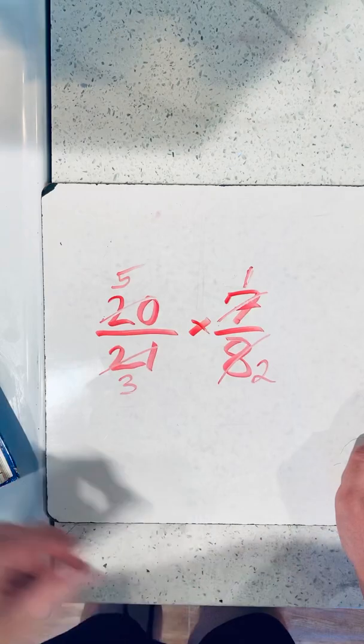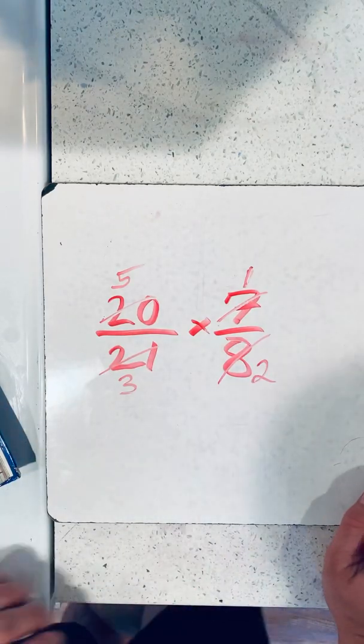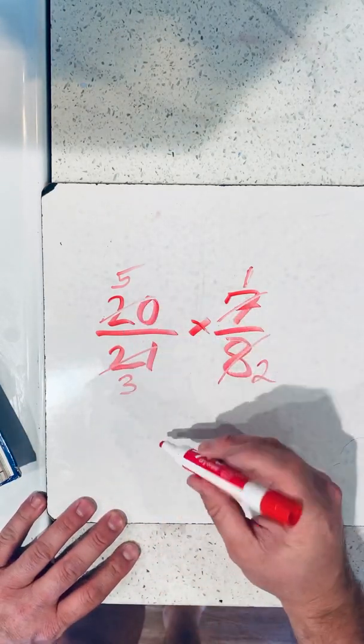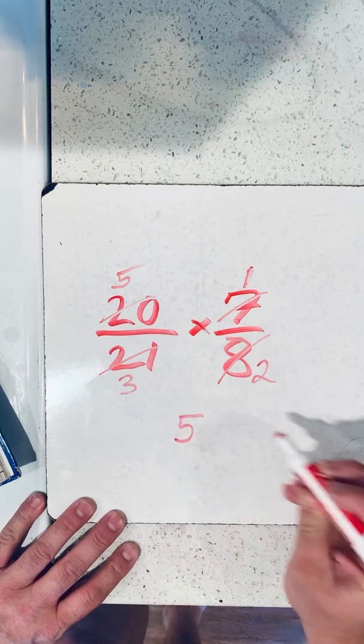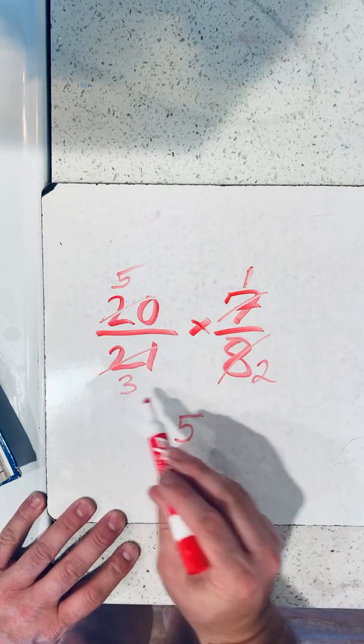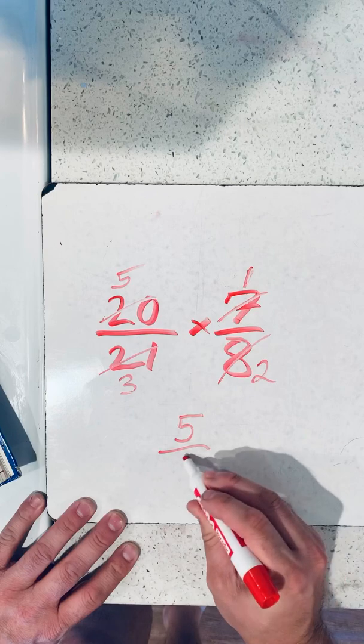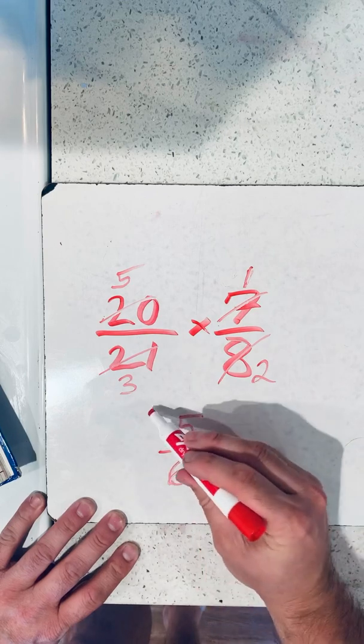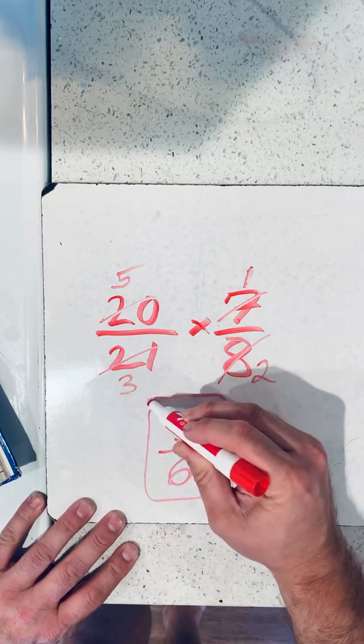Next, what we do is we multiply 5 times 1 becomes 5. 3 times 2 becomes 6. So it's super simple if we do it that way.